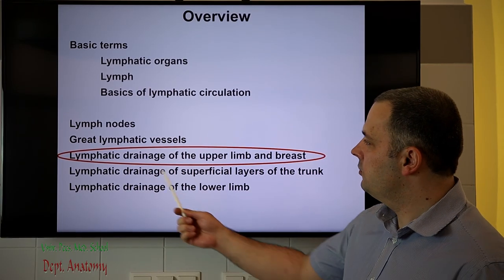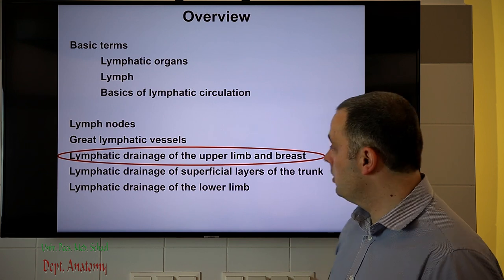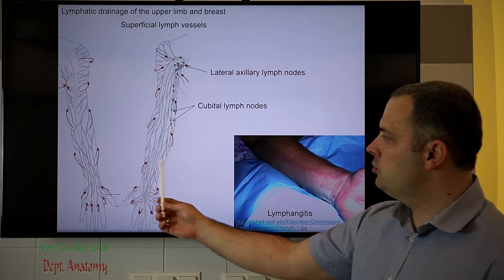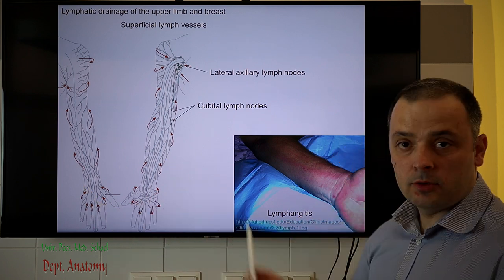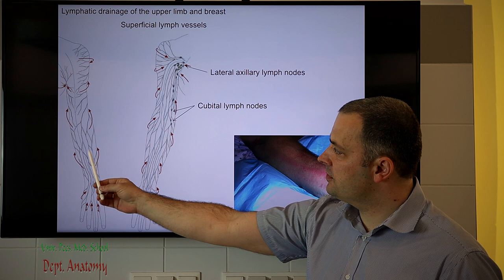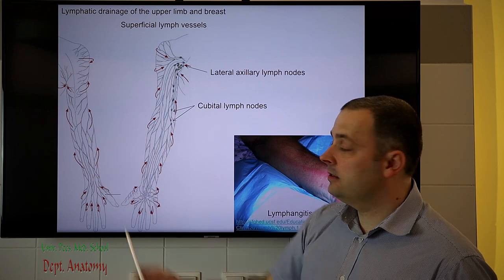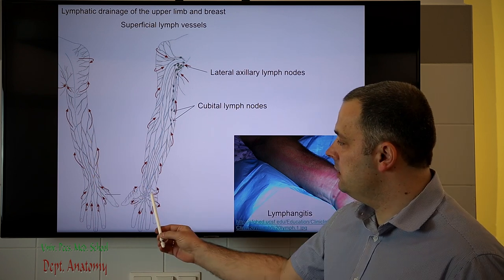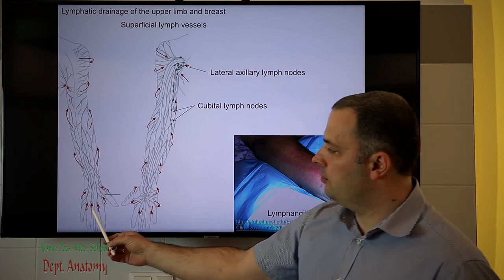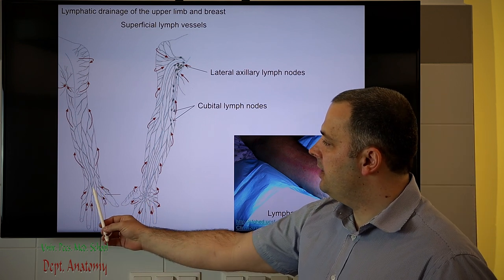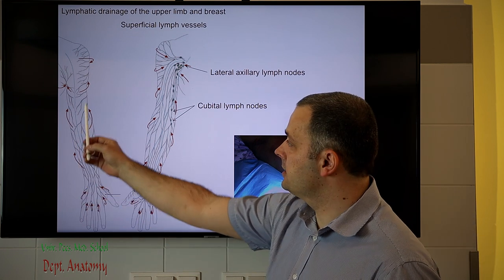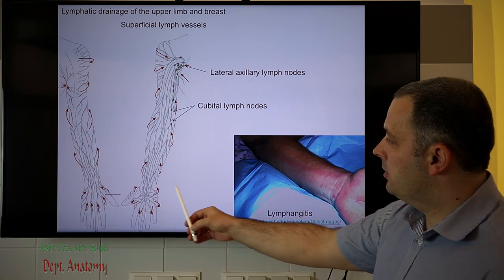I will now cover the lymphatic drainage of the upper limb and the breast. This scheme shows the torso and the palmar surface of the upper limb. The green lines represent the course of the lymphatic vessels, starting in the palm. Most of the vessels turn back to the dorsal side of the hand, and then travel upwards, typically next to the veins, subcutaneously under the skin.